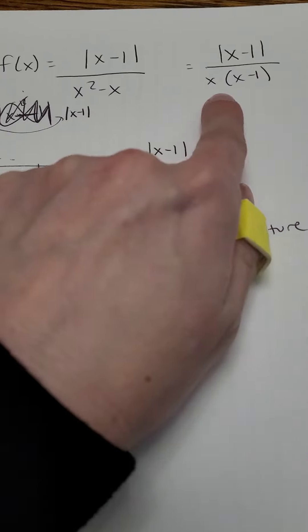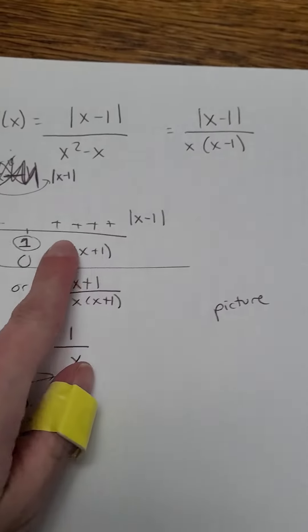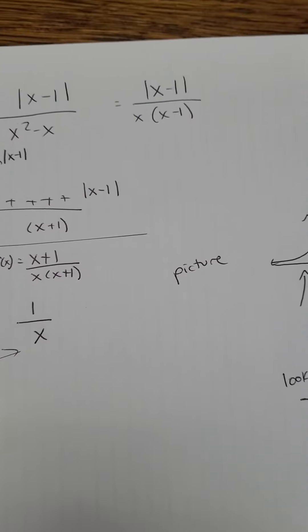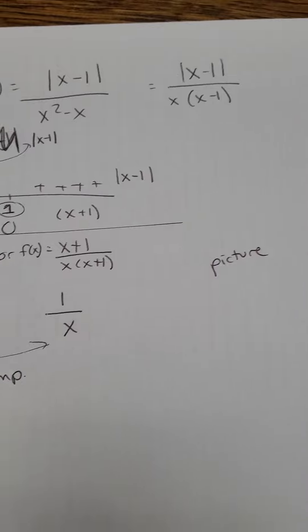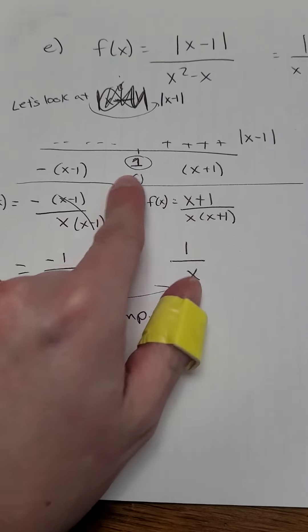So you have this function. I factored it. Oh, there's some funky stuff going on there. Okay, so look at the top. It's the absolute value of x minus 1. So I took a second and thought about the absolute value of x minus 1.